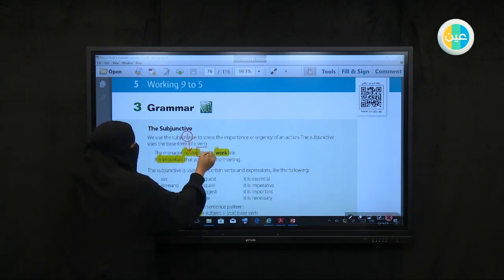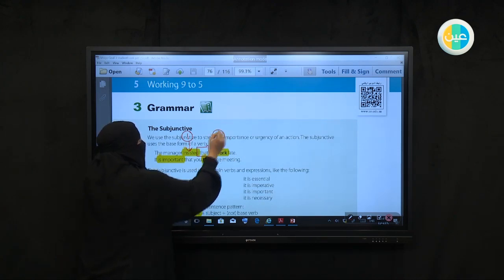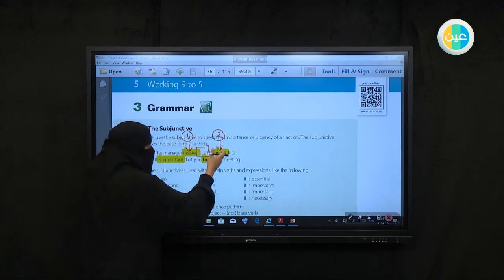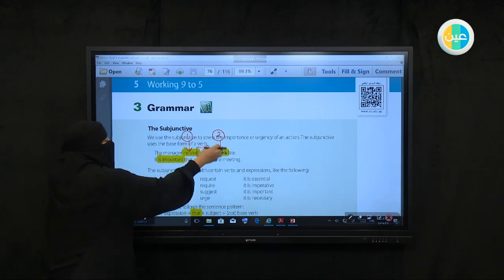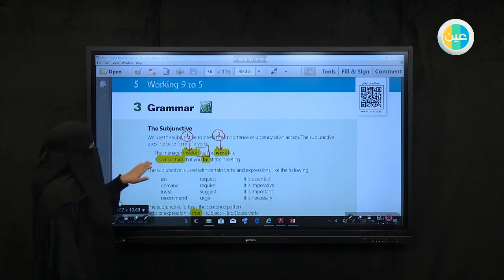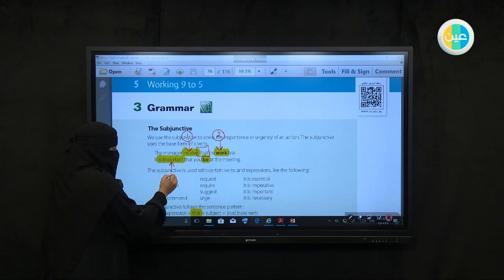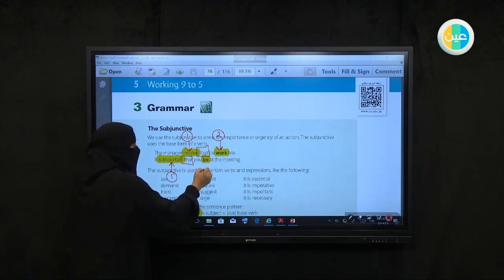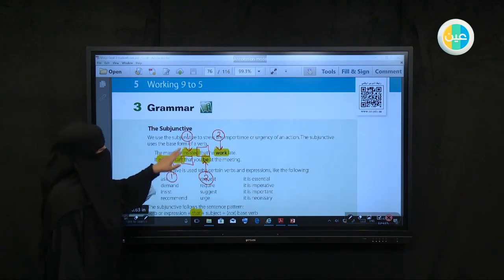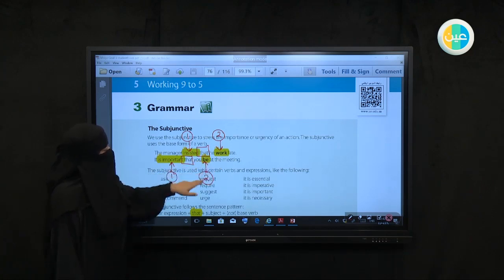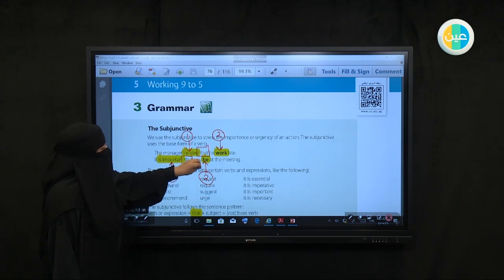With subjunctive, since we have two verbs. This is the first verb. Insisted would be the first verb. You have the connector which is 'that', which tells you this is a sentence with subjunctive. And then you have a subjunctive verb. The work here was the action required that the manager insisted on.